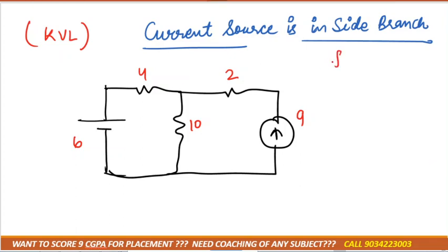Now see in this question, if this suppose asks you to find current in 10 ohm, we will simply apply KVL. First step is we have to see how many meshes are there. Two meshes are there.